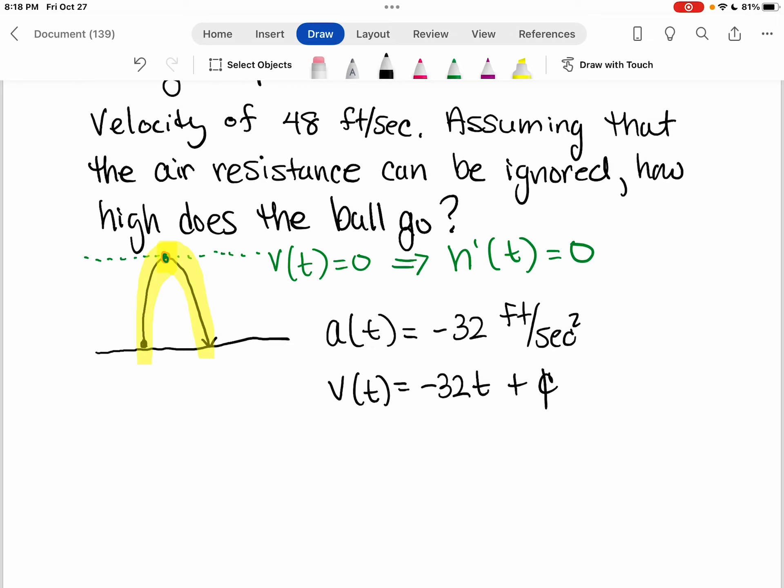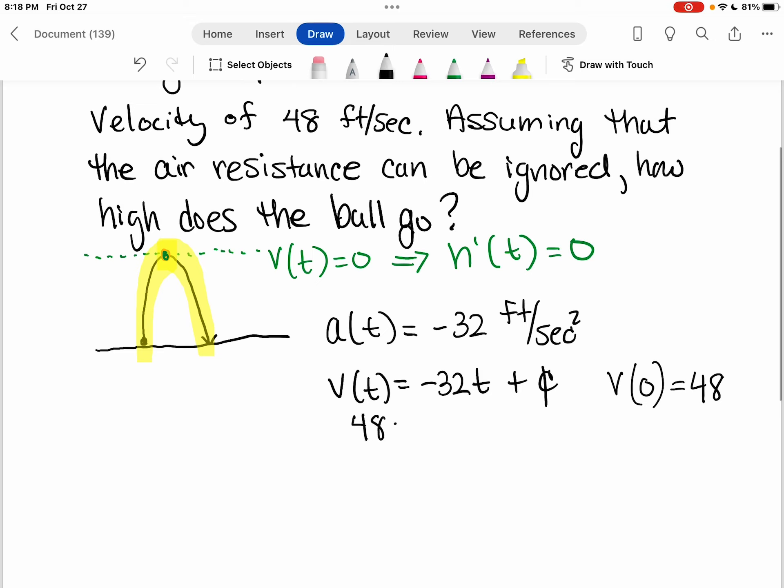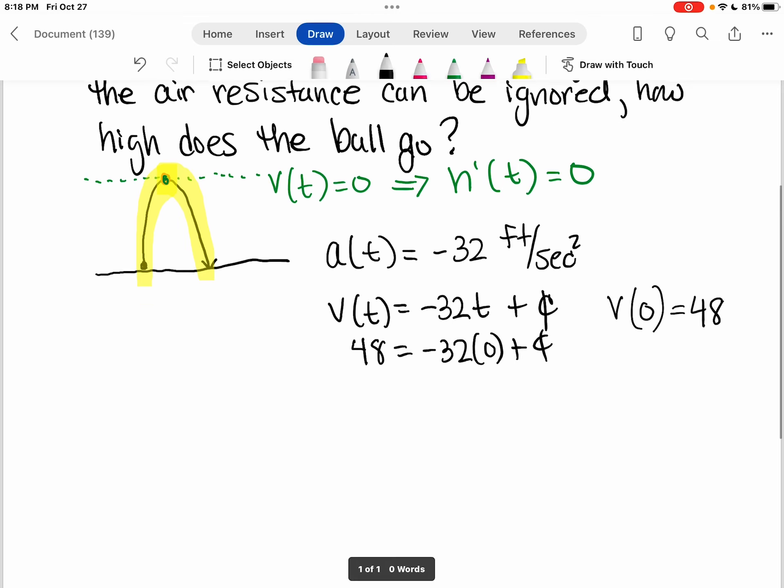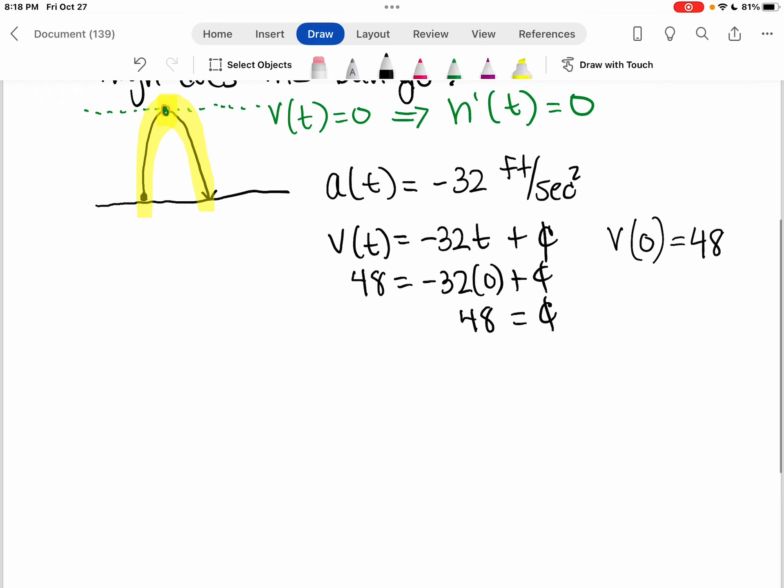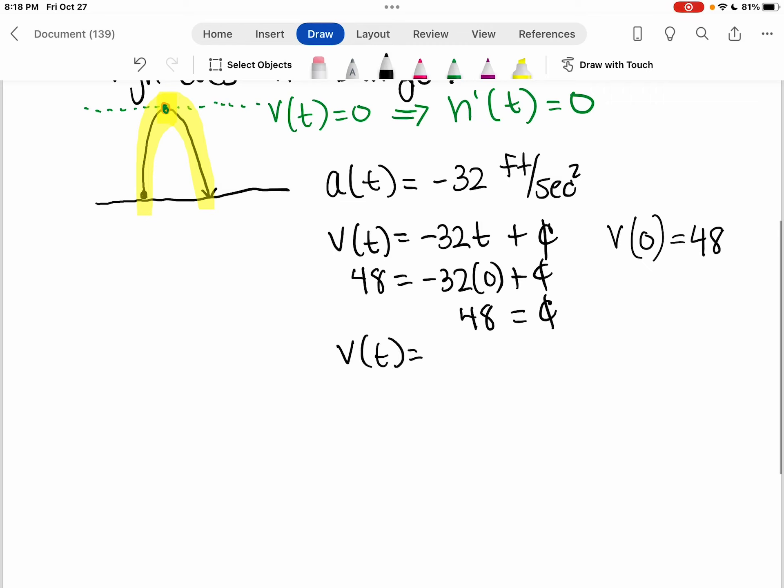Now, the problem tells us that the initial velocity is 48 feet per second. So that means if I plug in zero, I should get out 48. So I'm going to use that to find my constant. So when I plug in zero, I want to get out 48. So this tells me that my constant for the velocity is 48. So we have our velocity function.